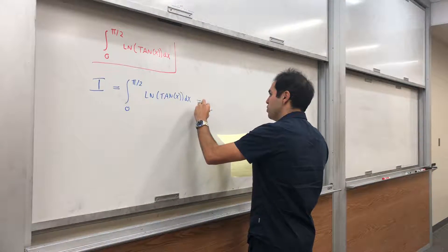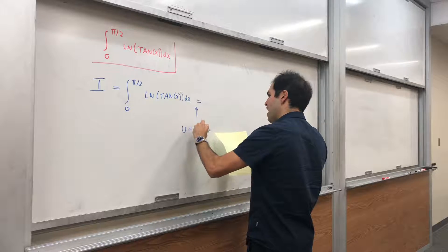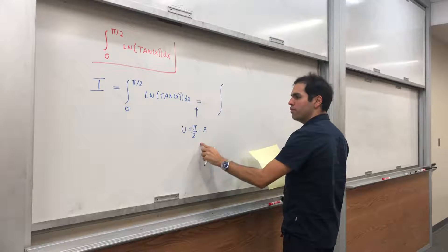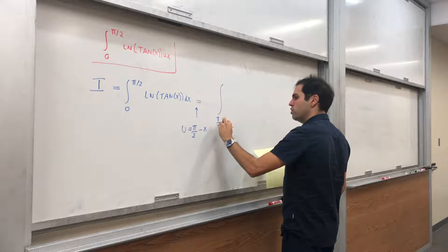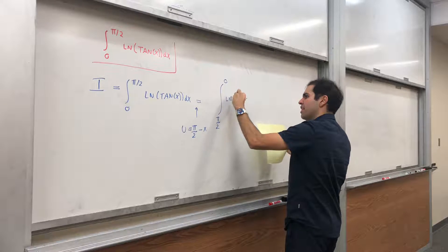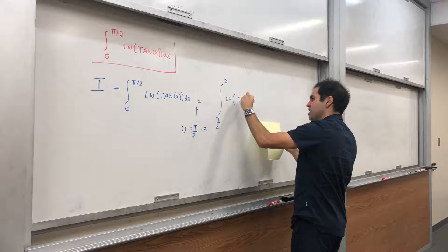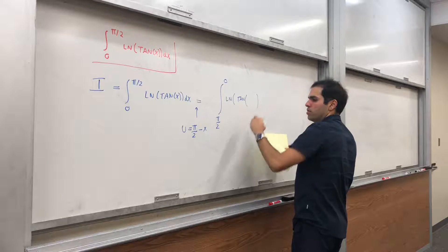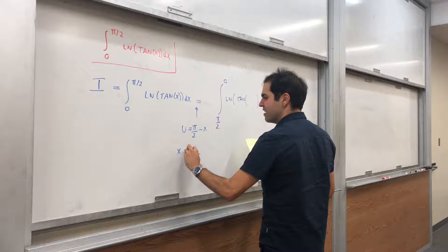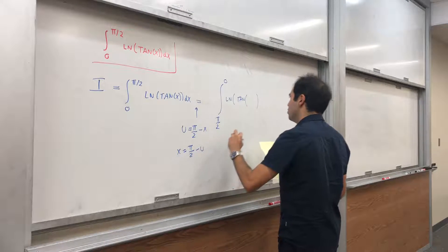So let just u be π over 2 minus x. Then, u of 0 is π over 2, u of π over 2 is 0. And then ln of tangent of, so if u is π over 2 minus x, then x is π over 2 minus u.